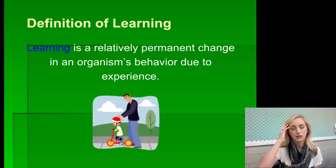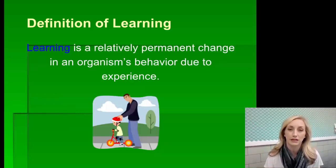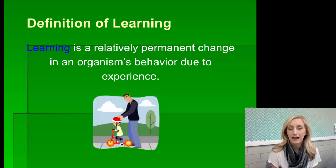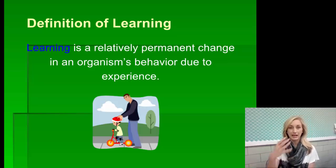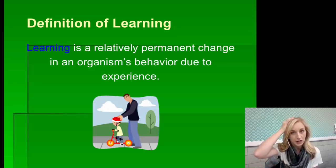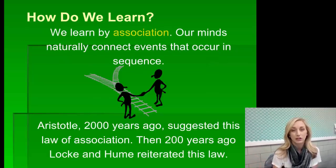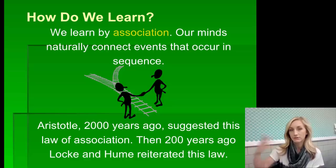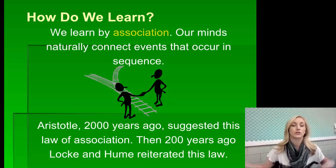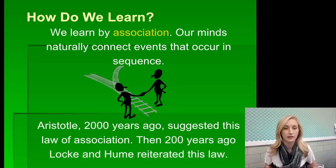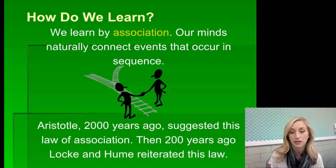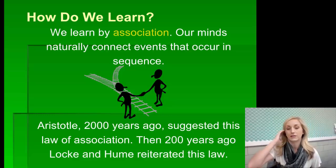Learning is a relatively permanent change in an organism's behavior due to some kind of experience they've had. If behavior doesn't change, the organism hasn't learned. So if you're sitting in class and your cognitive understanding of what's going on doesn't change, then you haven't learned the information. We learn by making associations — our minds naturally connect events that occur in sequence. Aristotle suggested this law of association 2,000 years ago, and Locke and Hume reiterated it 200 years ago.